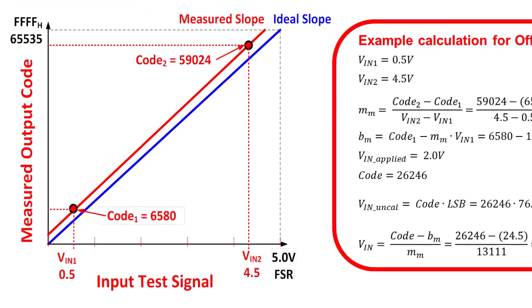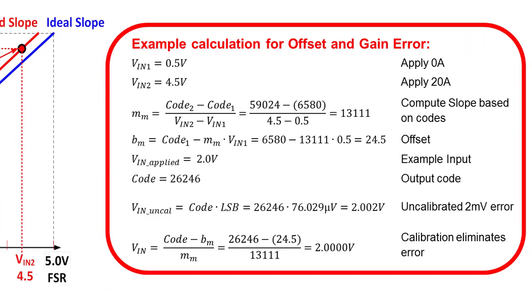This is an example calibration based on the circuit from the previous slide. In this case, the calibration test signals are at 0.5 volts and 4.5 volts. Notice that the ideal graph is shown in blue and the measured graph is shown in red. The measured graph has an offset and different slope than the ideal function. The slope can be calculated by taking the change in output code divided by the change in input voltage. The offset is determined by solving the y equals mx plus b equation for b and substituting one input and its associated output signal.